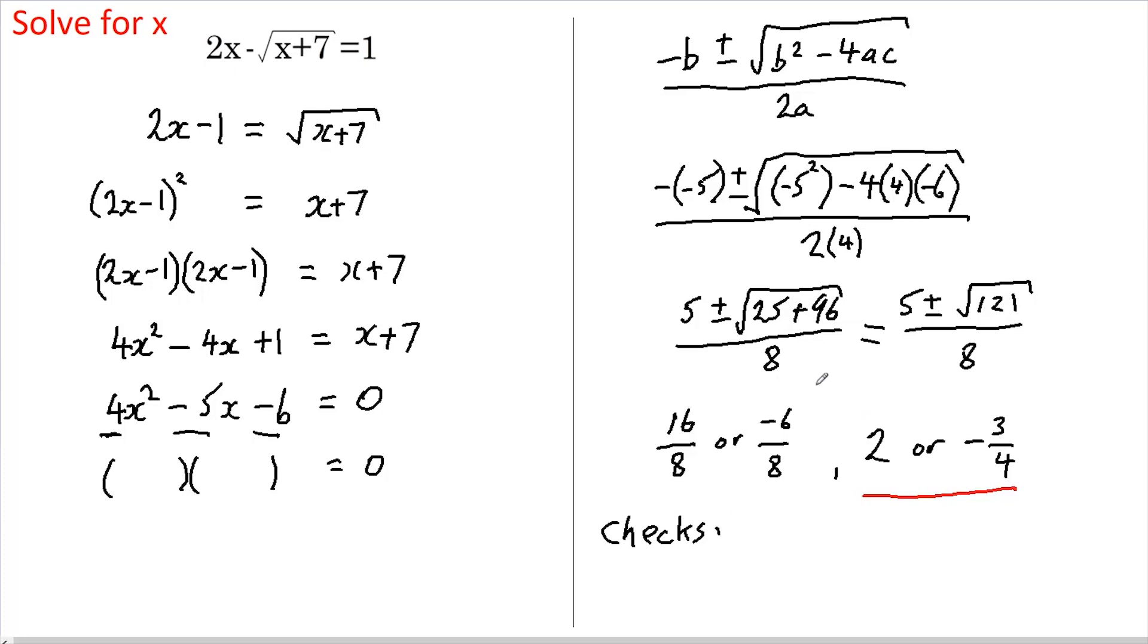If x equals 2, we get 2 times 2 is 4. Minus, 2 plus 7 is 9. Square root of 9 is 3. And that equals 1, which is exactly what it should do.